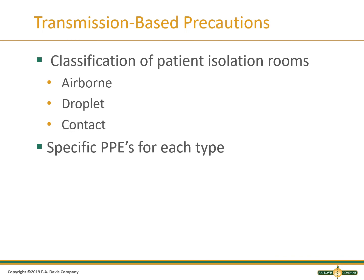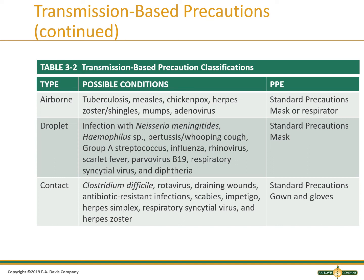Patient isolation rooms are classified by transmission type, with specific PPE required and usually instructions posted on the door. Isolation is based on how the disease is transmitted: airborne illness requires a tighter seal and special filters; droplet requires less; contact precautions are for touch transmission and don't require air filters. Airborne precautions require standard precautions plus an N95 respirator. Droplet precautions require standard precautions plus a mask. Contact precautions require standard precautions plus gowns and gloves.